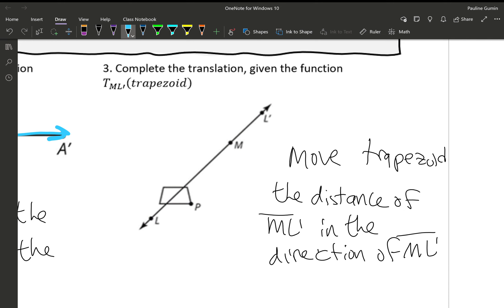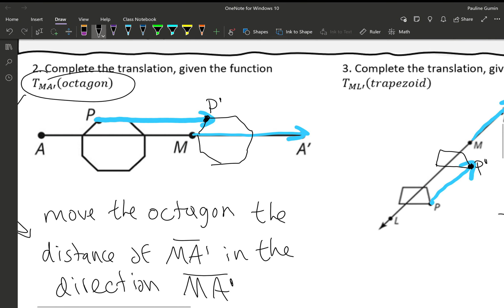So let's take a look at ML prime. We go from M to L prime. And it looks like we're going up and to the right. So kind of diagonally. I'm going to use that same distance. And I'm going to apply it to point P. I'm just going to redraw it. So those two blue lines are the same distance, ML prime. So at the end of this blue line, I'm going to write a point P prime because that's our new image. And then I'm going to do my best to draw a trapezoid.